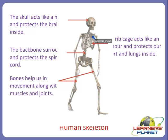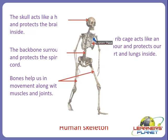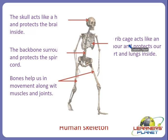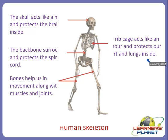The skeletal system is the framework of bones that gives support to our body, and there are a total of 206 bones in an adult human skeleton. The skull acts like a helmet and protects the brain inside it. The rib cage acts like armor and protects our heart and lungs inside it.